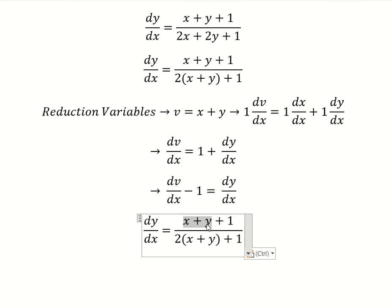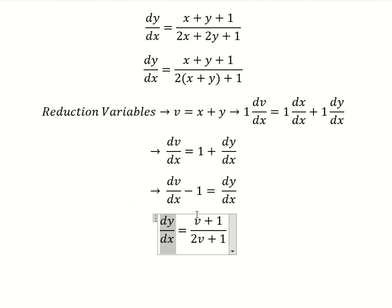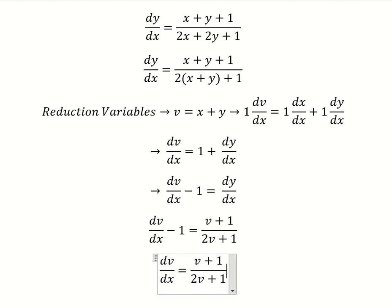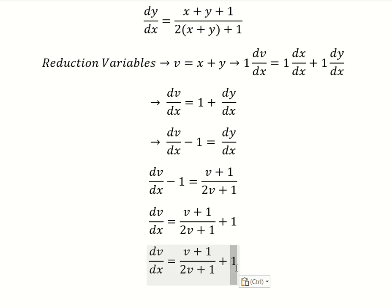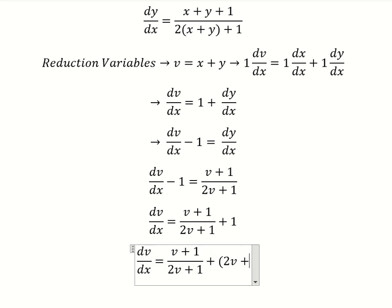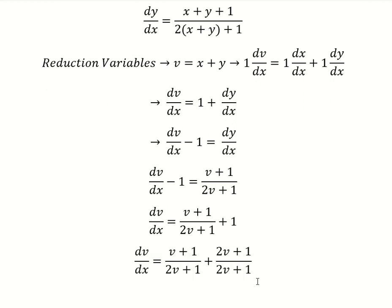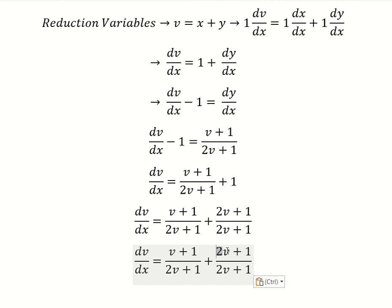So we change these terms for v. The negative one we put on the right. This gives us two v plus one over two v plus one. Combining: two v plus v gives three v, and one plus one gives two.